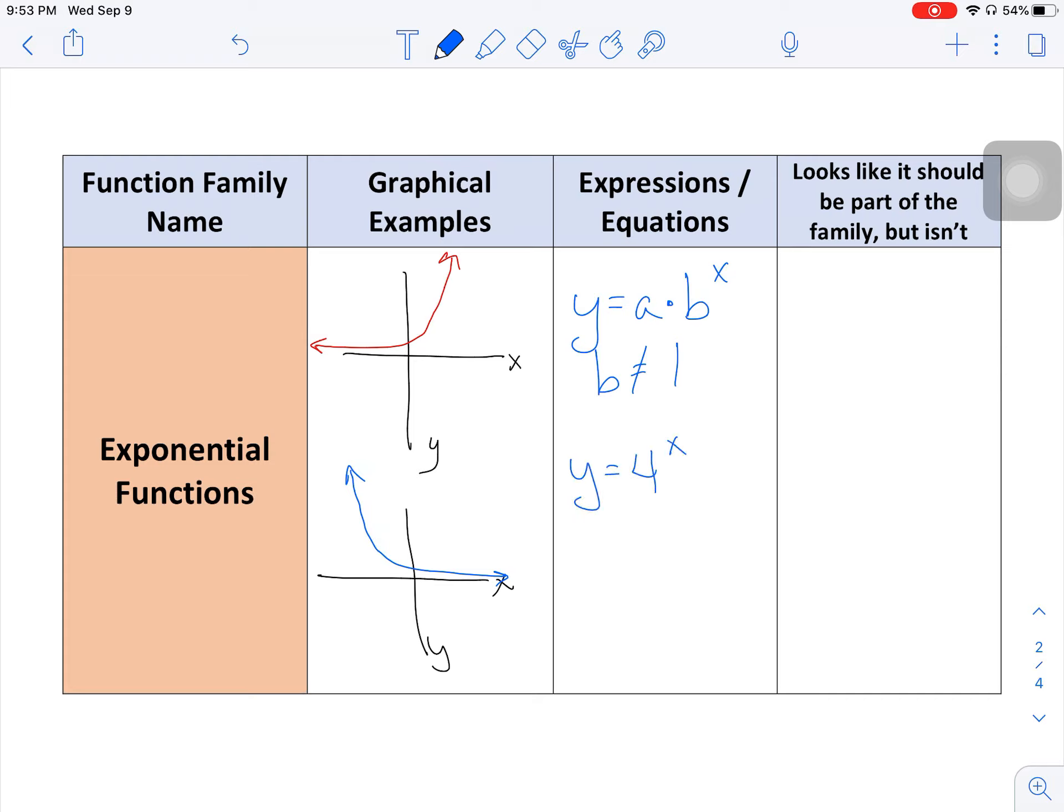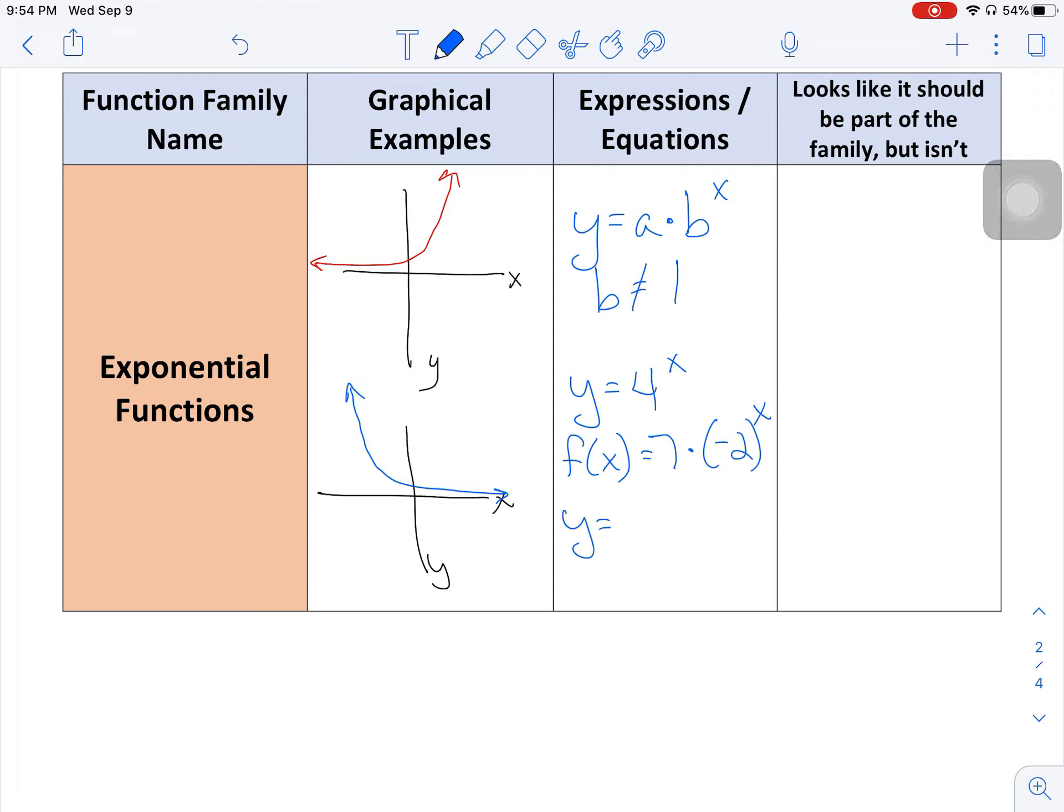So what could this look like? You could see y equals four to the x. You could see f of x is equal to seven times negative two to the x. Both of those are valid. Those are both just different forms of exponential functions. So what do you look for? You want to make sure that you have some number other than one raised to an x. Now one thing to be careful about, I'm going to give you one more example. Just so you know, y equals, let's say four times one half, and let's say your exponent was 2x minus three.